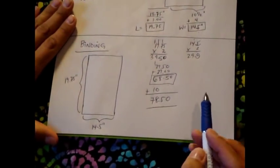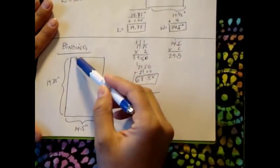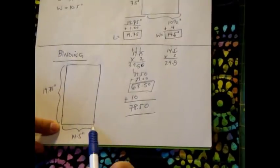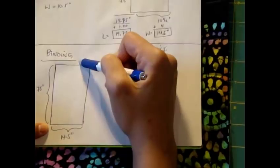To make any binding for a quilt, the first thing you need to do is measure the perimeter of your entire quilt. In this case, our laptop case measures 19 and 3 quarters inches in length and 14 and a half inches in width. The same thing is going to be doubled up on this side and the same applies for the width here.